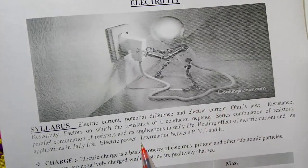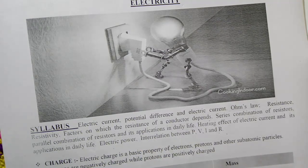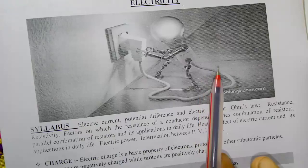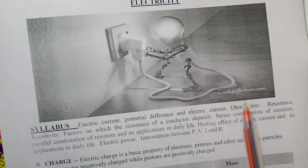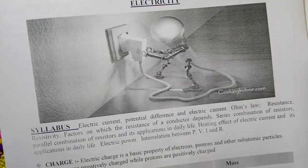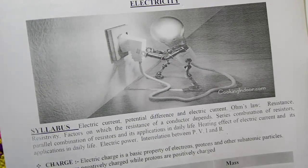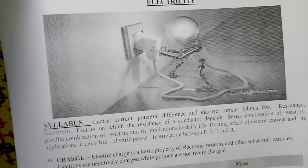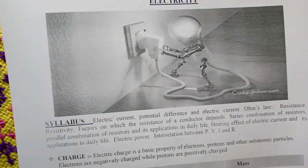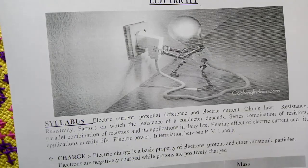In the second part you will study about the magnetic effect of electric current. The first part is chapter 12, electricity. Electricity consists of the movement of charge in a specific direction — either positive charge or negative charge. The movement of charge in a specific direction is called electricity. So we must study about charge.